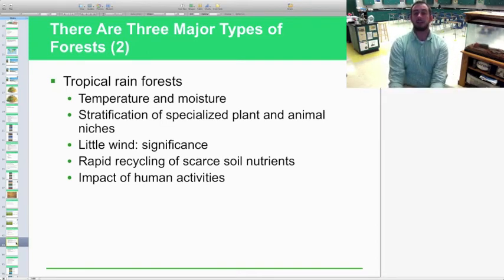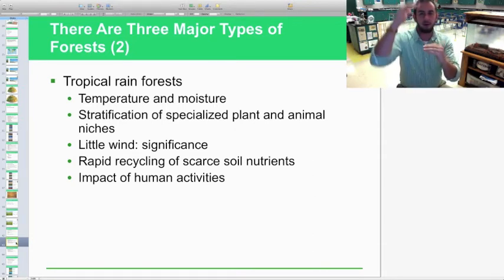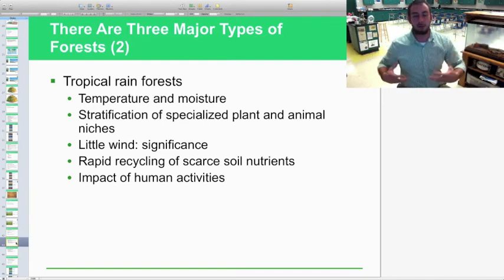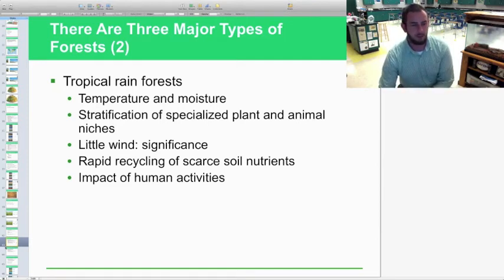Looking at tropical rainforest forests specifically, these have lots of temperature, high temperatures, and high moisture content. We have a stratification of specialized plants, animal niches. Stratification means in layers. There are so many nutrients and so much energy to be passed on to that ecosystem that organisms have literally specially adapted to live in different layers of the forest. Very little wind, which keeps all those nutrients there, not a whole lot of erosion by wind. So there's a lot of good nutrient soil there. Rapid recycling of the scarce soil nutrients because the plants are continuously growing all the time and using all those nutrients. Your impacting activities, we're deforesting the rainforest in the past 20 years to use for monoculturing our own crops.